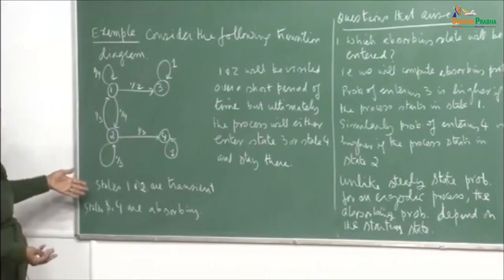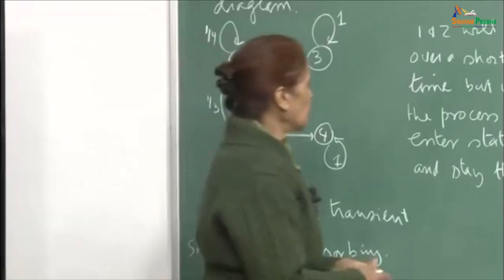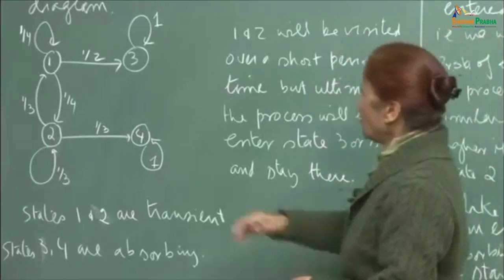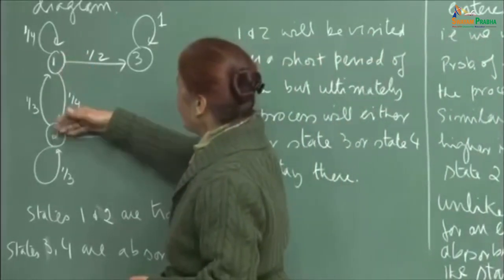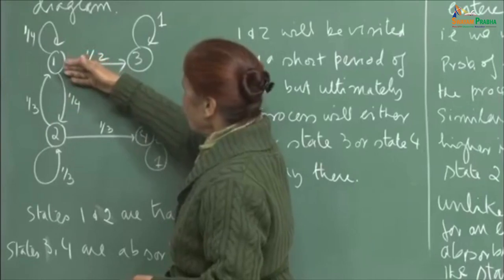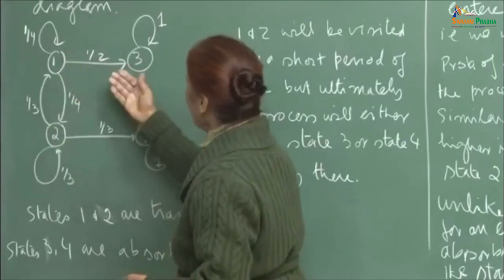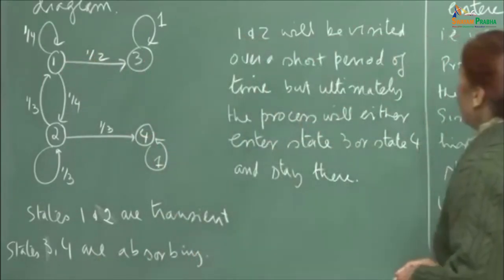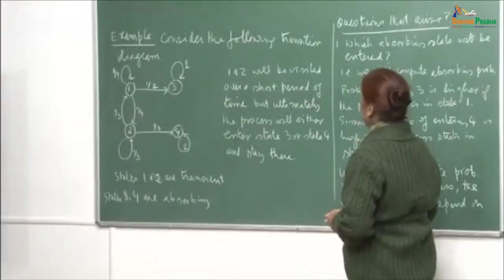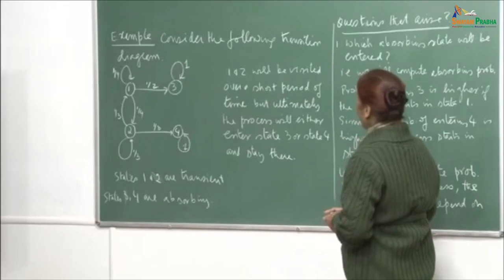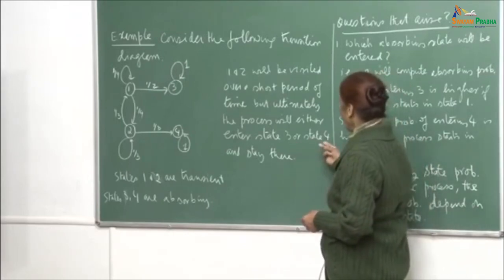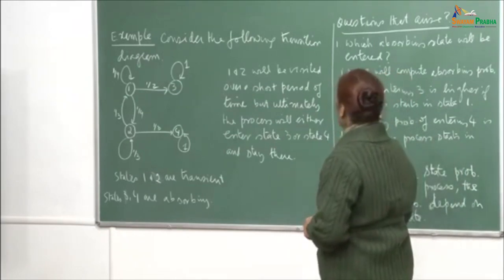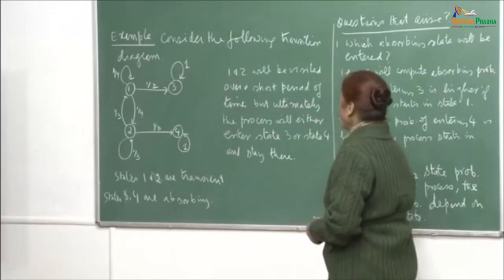Over a short period, 1 and 2 will be visited because they are transient. For a while, the process may go from 1 to itself or from 1 to 2, then 2 to 1, or 2 to 2. But the moment the process transitions to either 3 or 4, it stops. So over a short period of time, 1 and 2 will be visited, but ultimately the process will enter state 3 or 4 and stay there.